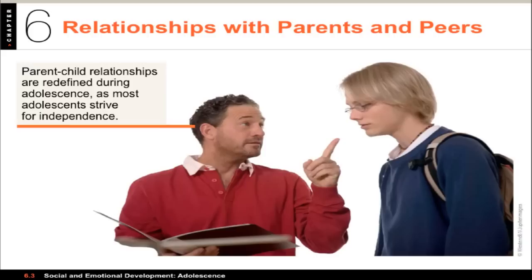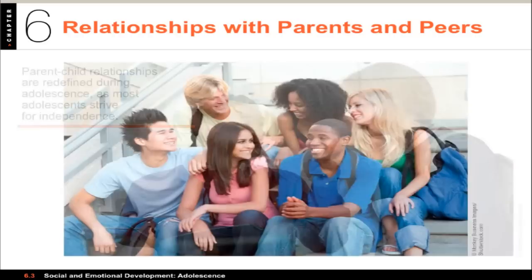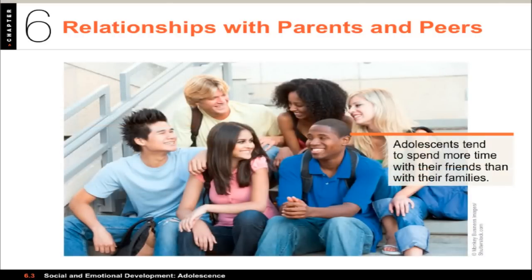Parents during this time tend to loosen up and use less punishment as teenagers grow older. Parenting styles also have an influence on teen development. Adolescents who grow up in an authoritative home — one that's very high in warmth and communication, with high expectations and demands but also communication and support — tend to demonstrate the healthiest behaviors in the teenage years. Throughout adolescence, same-gender friendships grow more important, and by 10th grade, same-gender friendships surpass the importance of parental support to the adolescent.